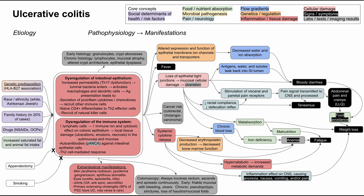This is a mechanism of disease map for ulcerative colitis. I'll be talking about the etiology of ulcerative colitis, as well as the pathophysiology mechanisms that lead into the manifestations of the disease. I've also made a flowchart like this for Crohn's disease, and it's worth looking at both together. The maps are color-coded according to the core concepts listed in the legend.